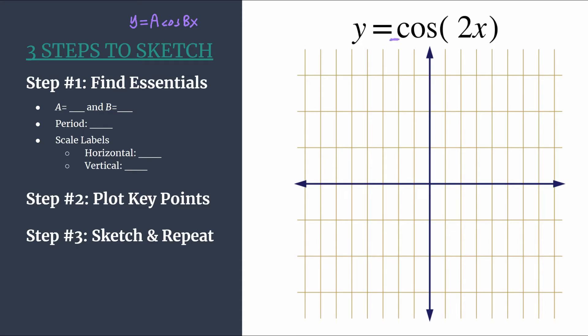So a is an understood one in front of our cosine, so our amplitude is one, that's the distance from the midline up to the maximum, or the midline down to the minimum, and then b in this case is 2.